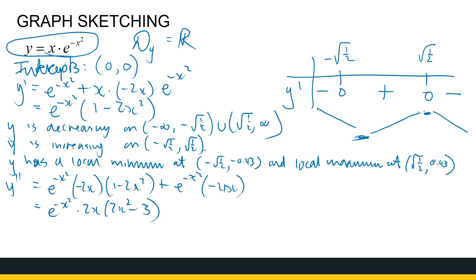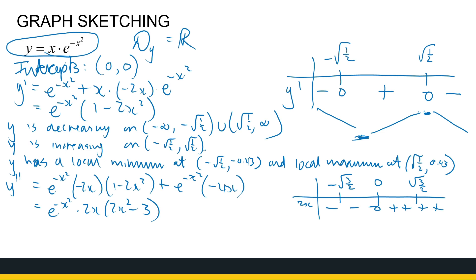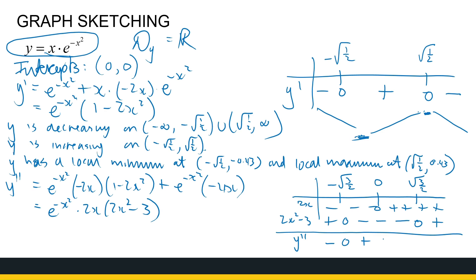We look at when the second derivative is 0 to analyze the signs. e to the power minus x squared is always positive. 2x is 0 at 0. For 2x squared minus 3, the zeros are at minus root 3 over 2 and root 3 over 2. For values in between those, 2x squared minus 3 is negative; outside, it's positive. Combining the signs, the second derivative gives a pattern of minus, plus, minus, plus across the four intervals.